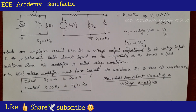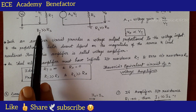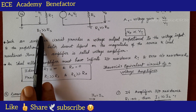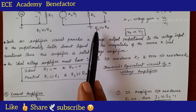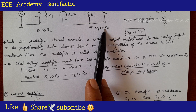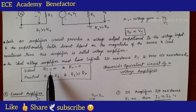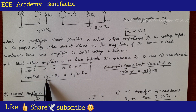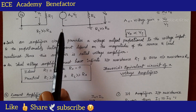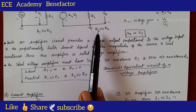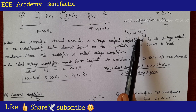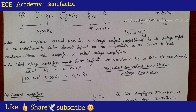A voltage amplifier is an amplifier that provides an output voltage proportional to input voltage, where the proportionality factor is independent of source resistance and load resistance. For an ideal voltage amplifier: R_i is infinity and R_naught is 0. For a practical voltage amplifier: R_i is very very large compared to R_s, and R_l is very very large compared to R_naught. This is how we draw the voltage amplifier Thevenin circuit.